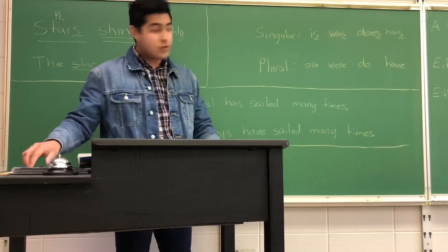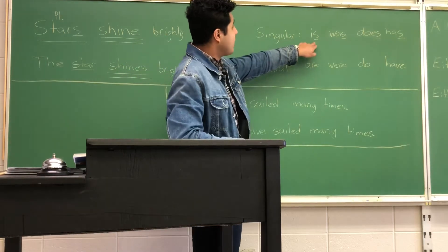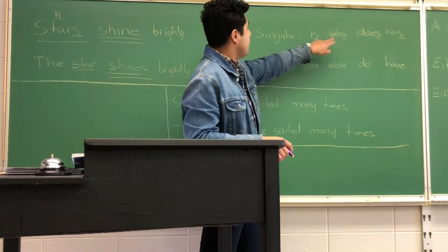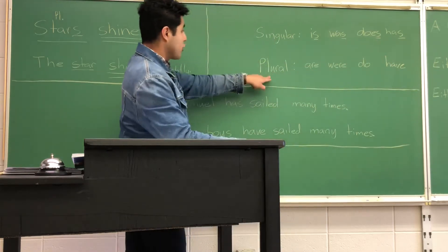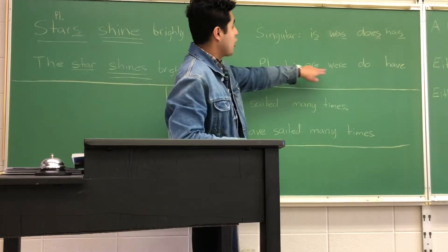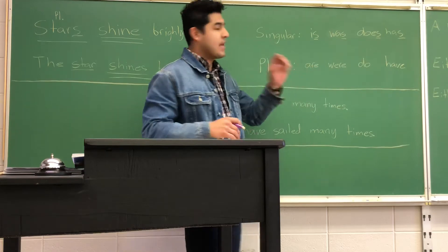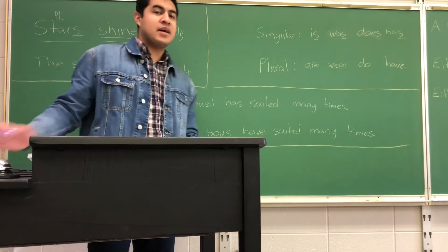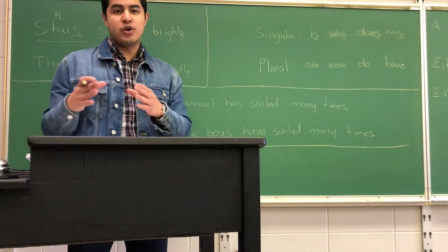We have this chart here. If you notice, our singular verbs all have an S in the ending: is, was, does, has. And then our plural verbs don't: are, were, do, have. This is going to be important — don't let it confuse you. We're going to practice it as we go.